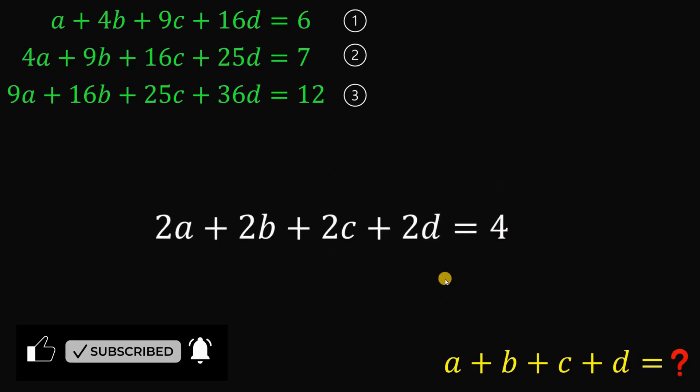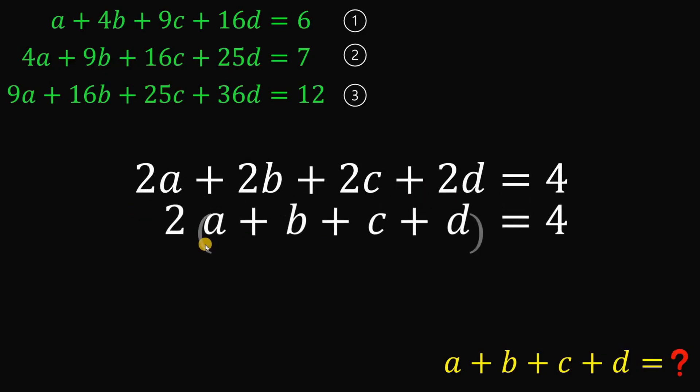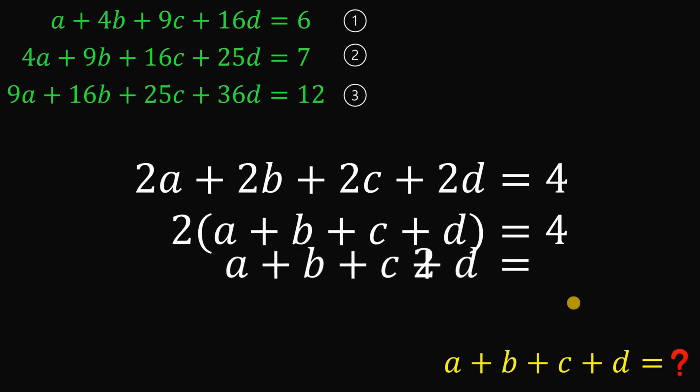Now let's focus on this result because if we factor out 2 on the left hand side of our equation, we get 2 multiplied by a plus b plus c plus d. This is what we want to find. To get this value, let's divide both sides by 2. And sure enough, we get a plus b plus c plus d equals 2.